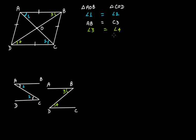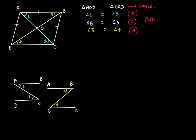Now we have two angles equal: angle 1 equals angle 2, the included side AB equals CD, and then angle 3 equals angle 4. By the ASA criterion, we can say that triangle AOB and triangle COD are congruent.